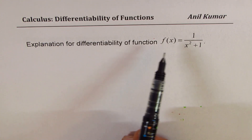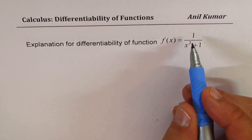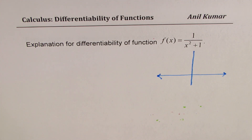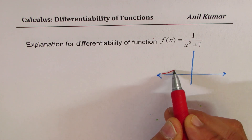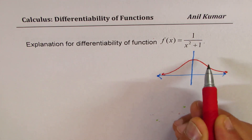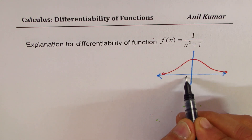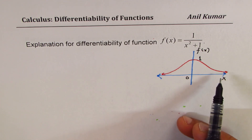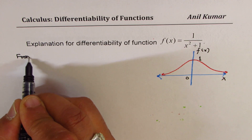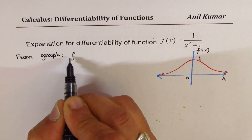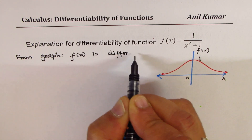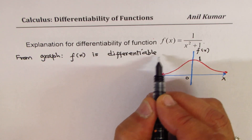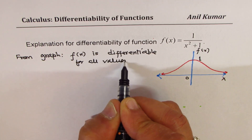Let's consider the graph for the function f of x equals 1 over x squared plus 1. This is a reciprocal function. You could make a table of values and realize that at x equals 0, it is 1. That is f of x for all values of x — it is a smooth curve. From the graph, we can conclude f of x is differentiable for all values of x.